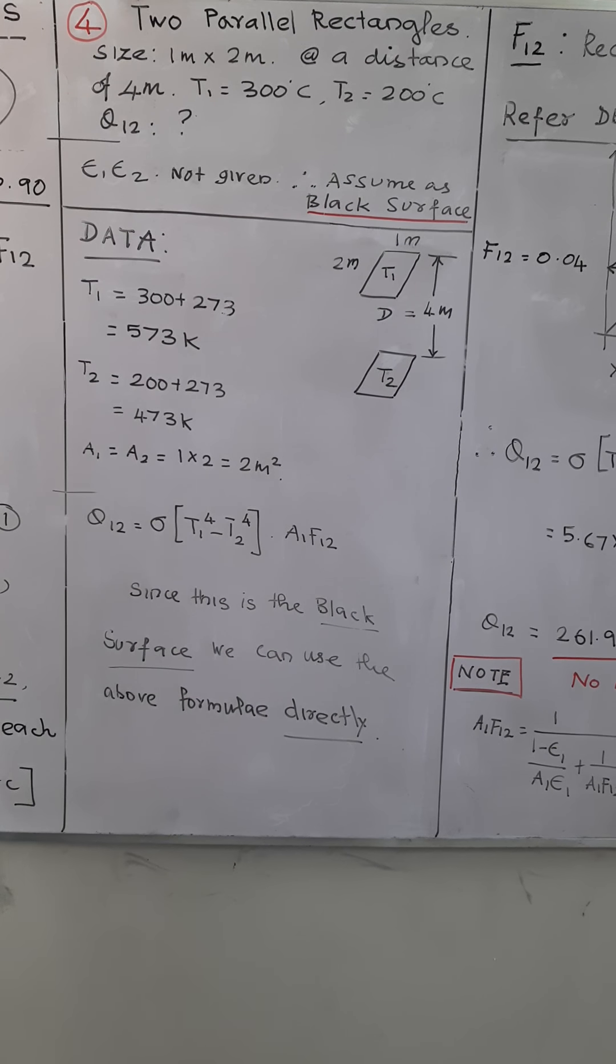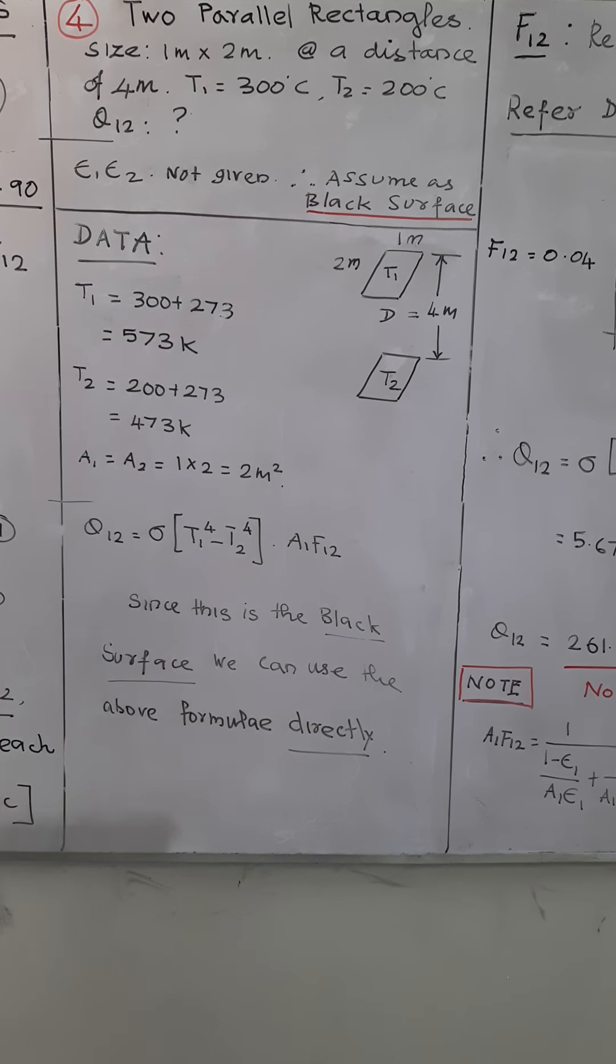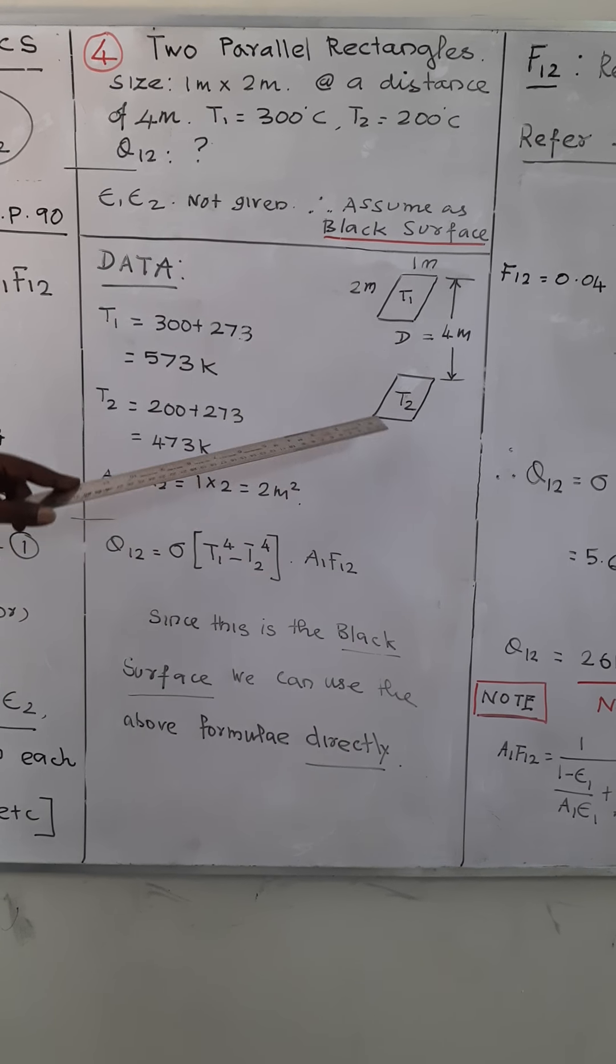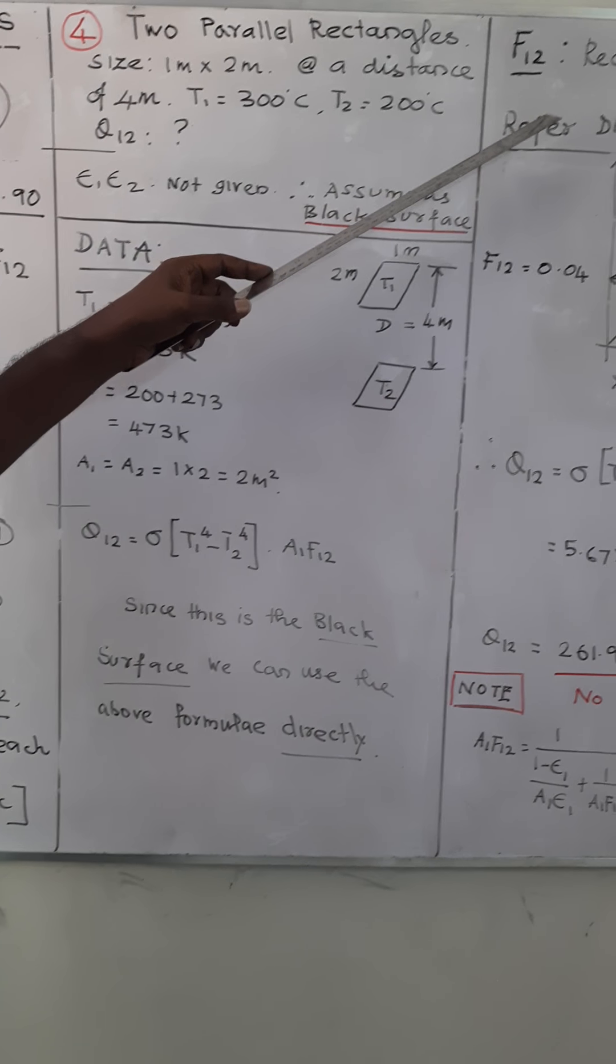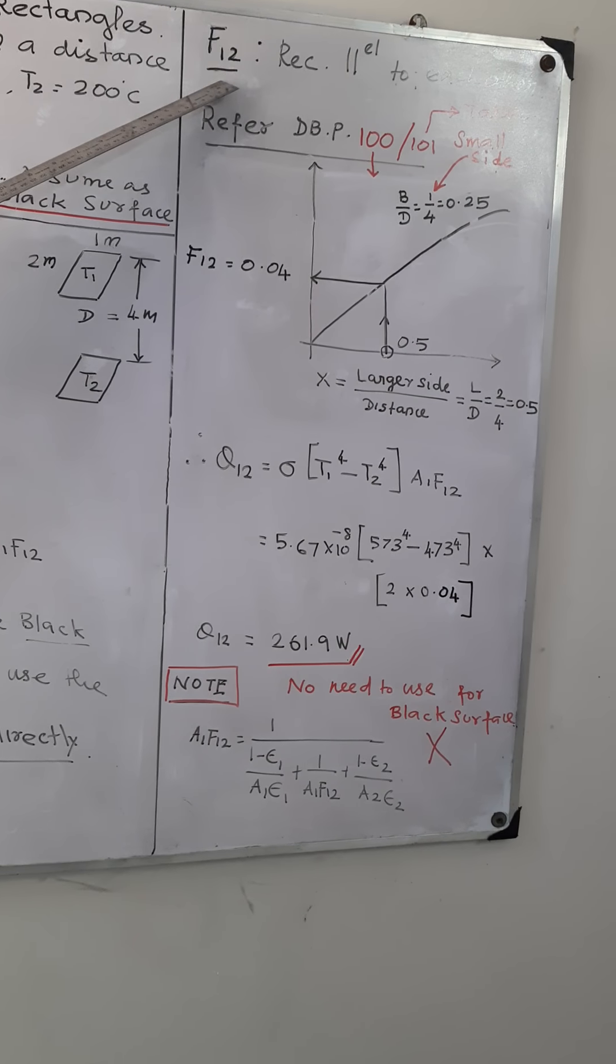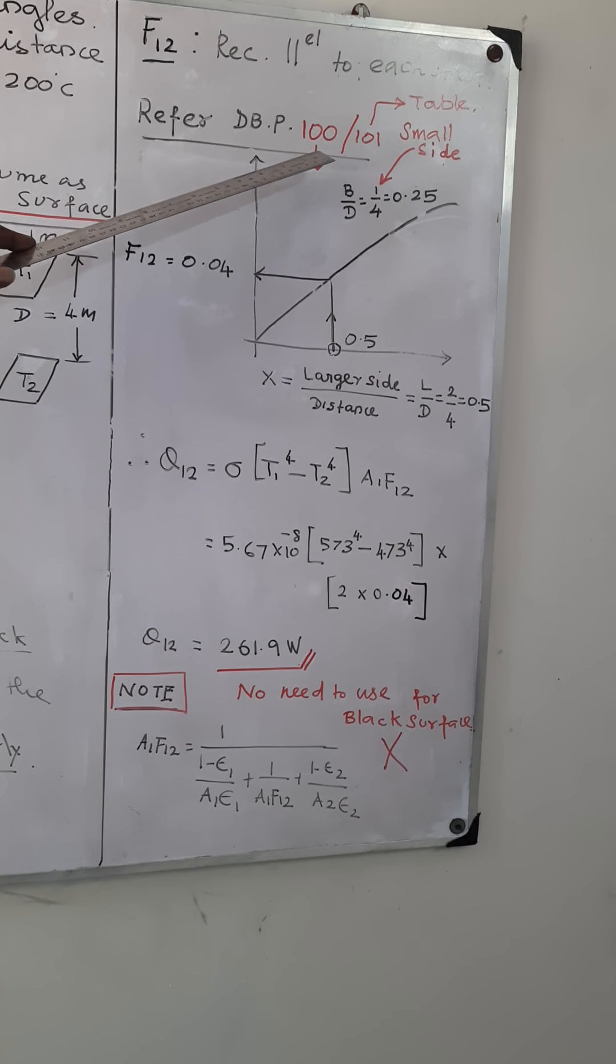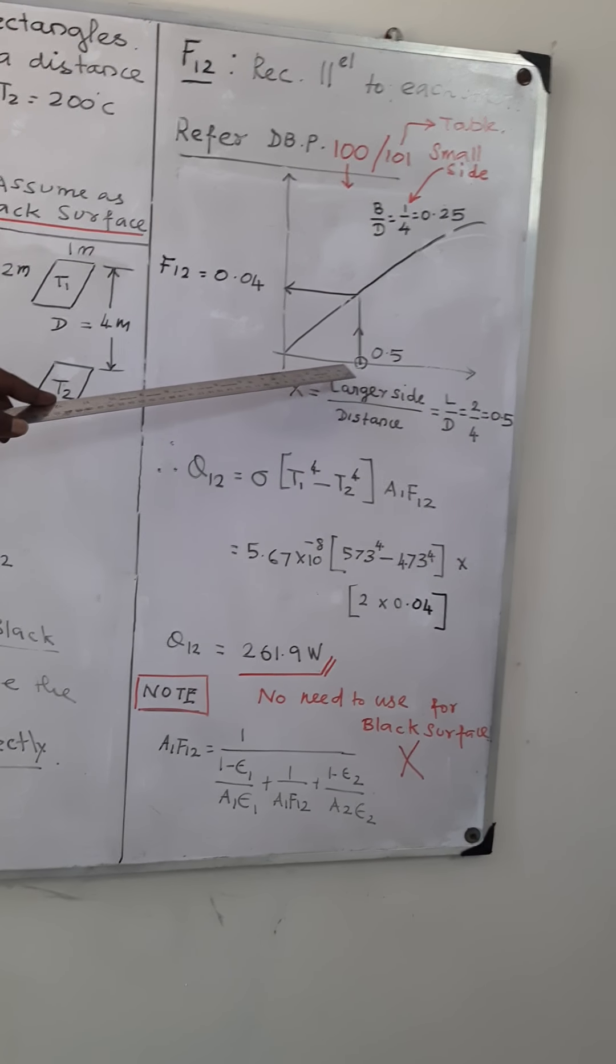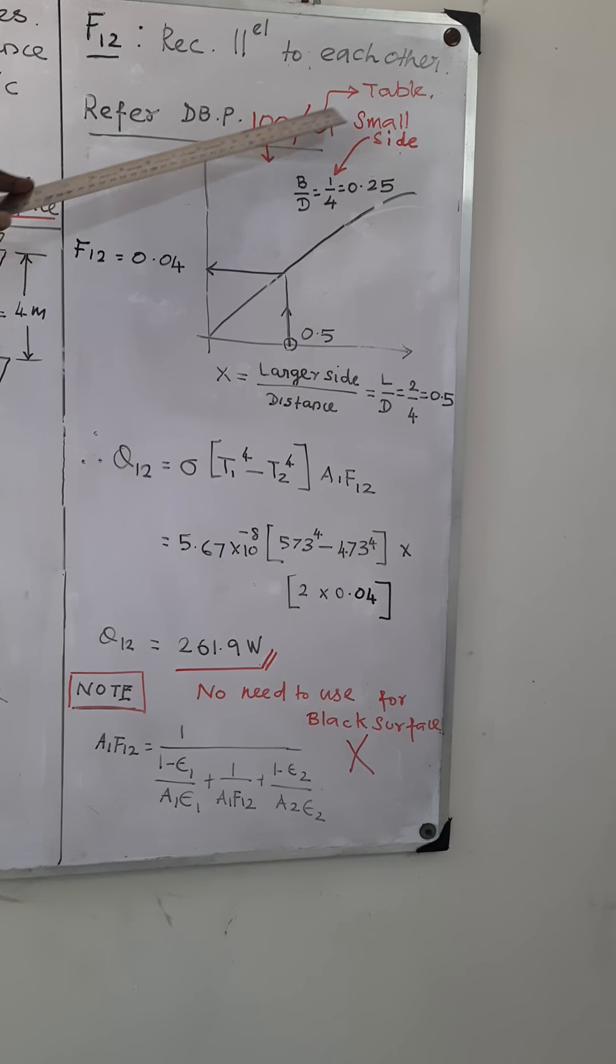You can use this formula straightaway because it's a black surface. Let's see how this shape factor is calculated for this configuration of rectangles. For the shape factor, you can refer your data book at page number 100 for using a graph method. You can use page 101 if you are going to refer the table.